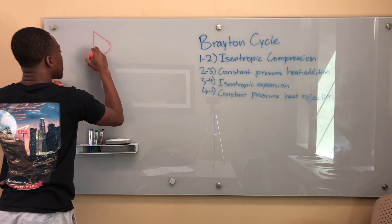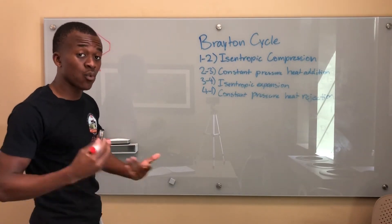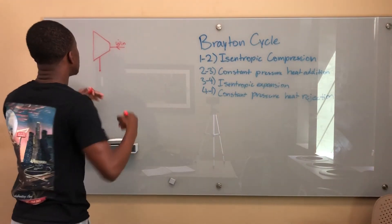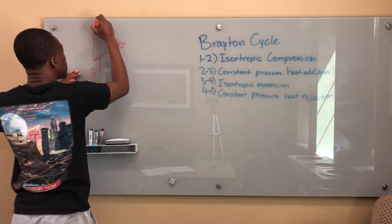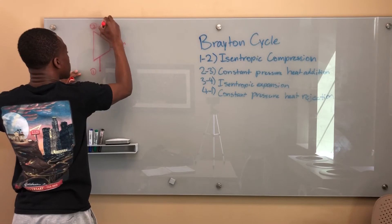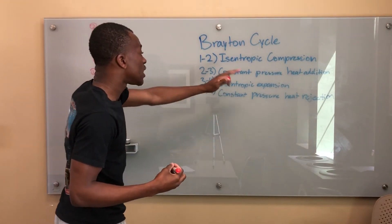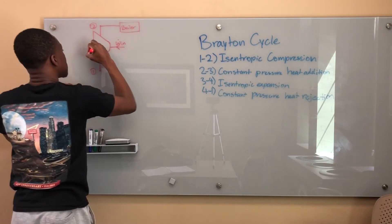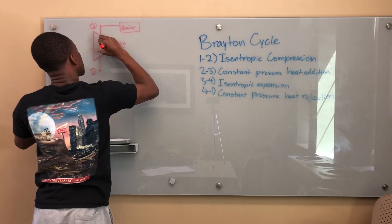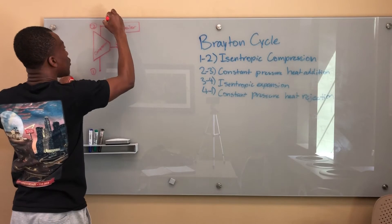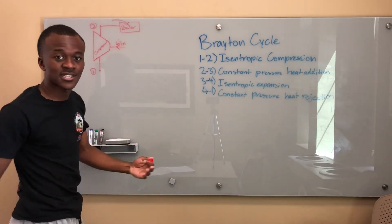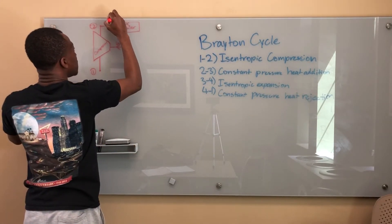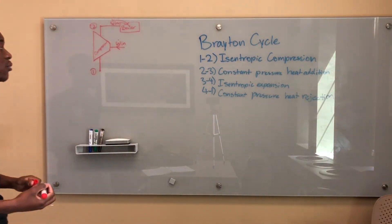Everything we've been learning is building upon itself. In a compressor, work goes in - so I'll draw work going in. This is point one. From stage one to two we have isentropic compression. From point two to three we have constant pressure heat addition, so we have something called a boiler. The boiler heats up the air in this situation, with Q-dot in being the important part.